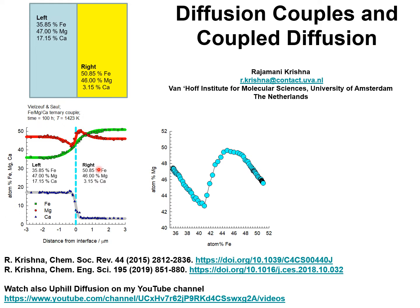As an example, the composition profiles at time t equals 100 hours are shown in this graph. If we observe the composition profiles, we note that magnesium experiences an undershoot and an overshoot in its composition profile in respectively the left and right compartments. It is also interesting to note that the driving force for magnesium is just one percent, significantly smaller than the driving forces for iron and calcium.